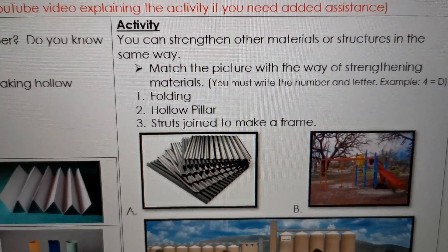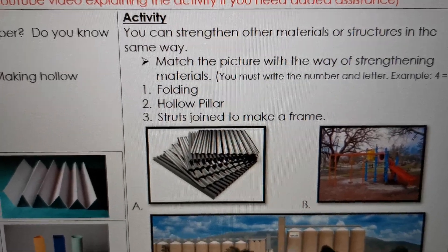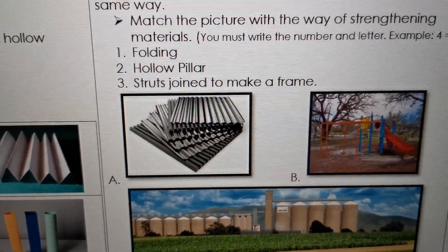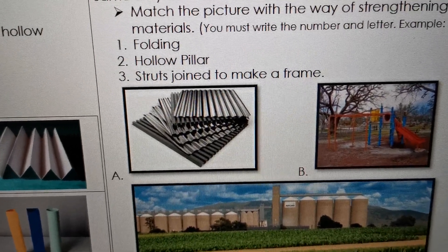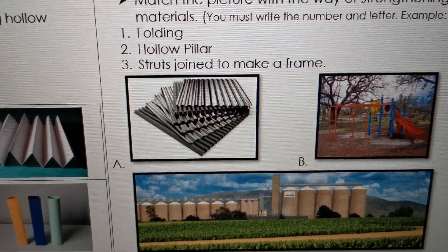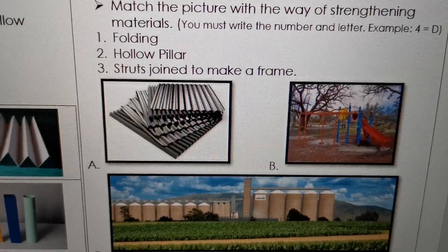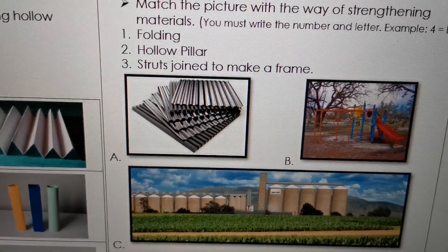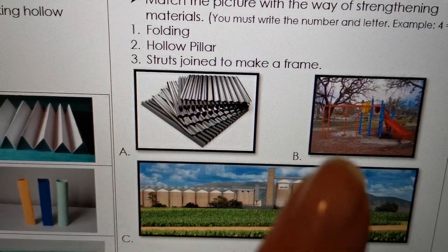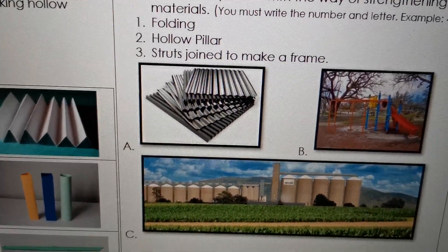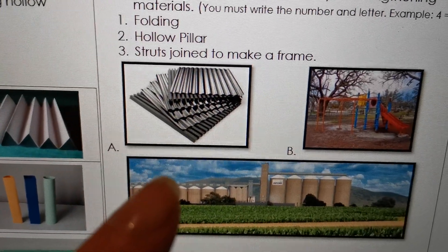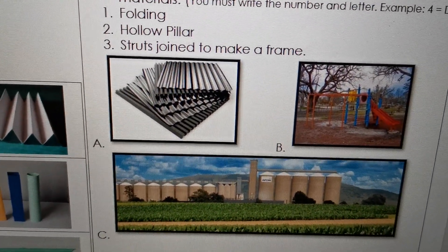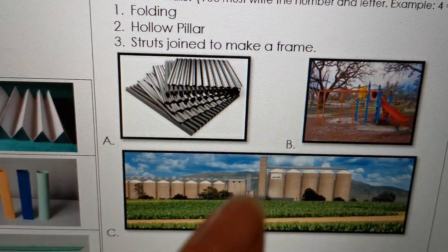The activity instruction is: match the picture with the way of strengthening. We have three pictures - the metal sheets, a jungle gym, and silos. You're going to write the numbers 1, 2, 3. Folding is number 1 - do you think an example of folding will be A, B, or C? Number 2 is hollow pillar - which one is an example of a hollow pillar, A, B, or C? And the last one, struts joined to make a frame - is it A, B, or C?